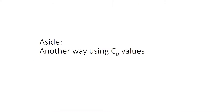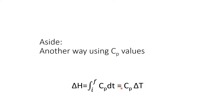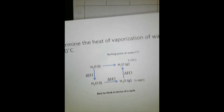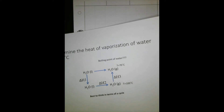Now incorporating the heat capacity values — C sub P is the constant pressure heat capacity. You can basically say delta H equals C_P times delta T. So we have our temperature interval, in this case 70 to 100 degrees C. I'll show working out this problem that way as well.